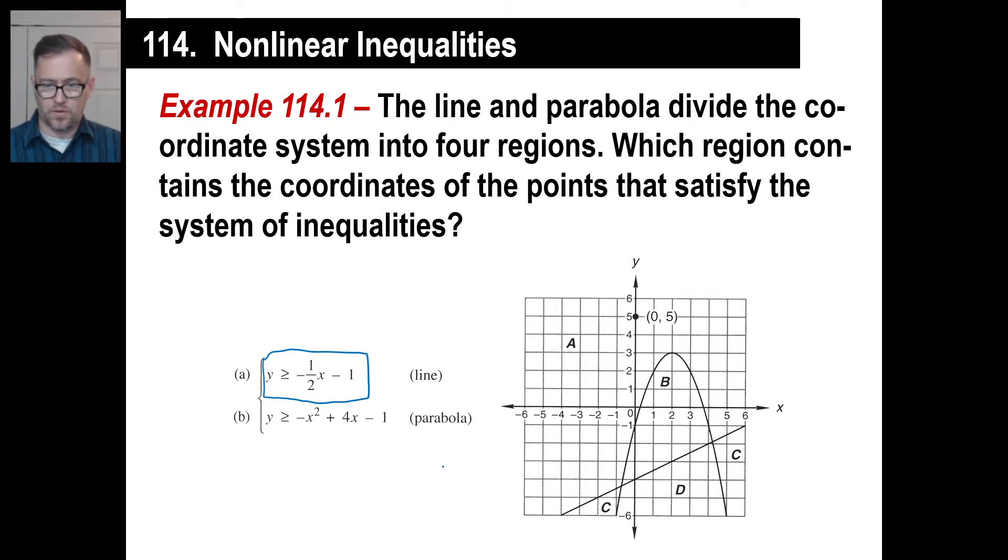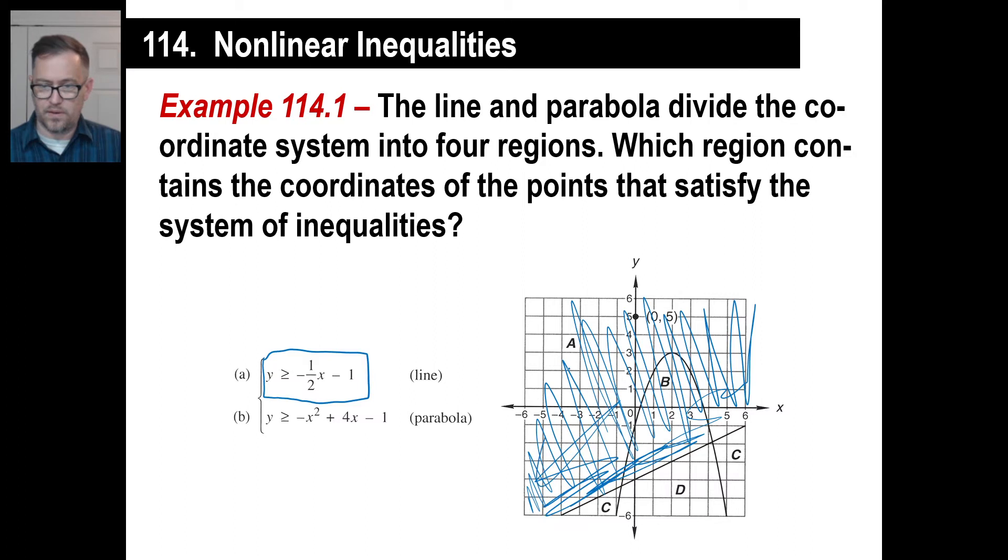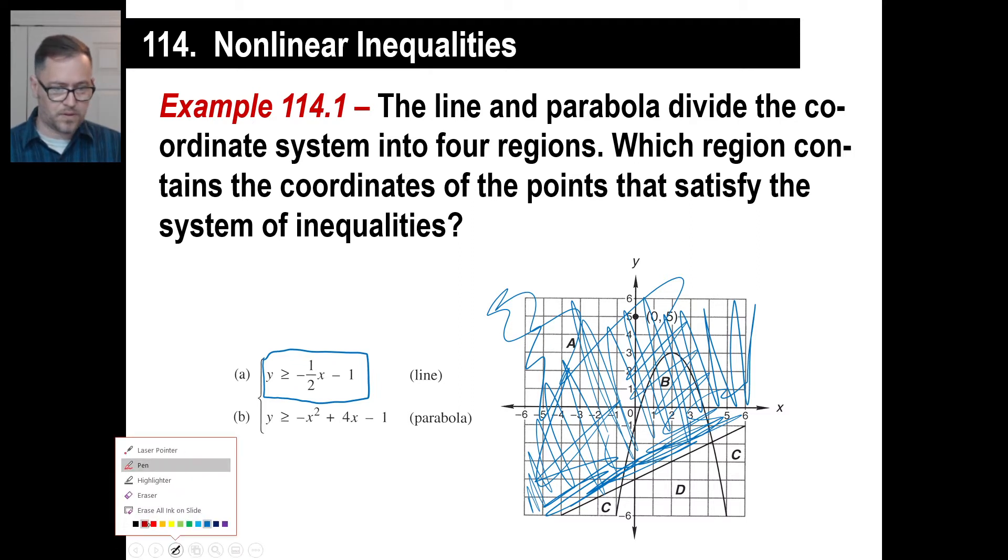First off, we have y is greater than or equal to negative 1½x minus 1. Greater than or equal to would be everything above this entire part right here, and there's the line, greater than that and equal to that as well because we have the equal sign. Let's go ahead and do the other color, let's call it red.